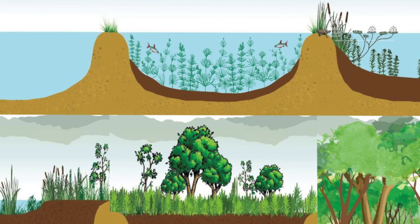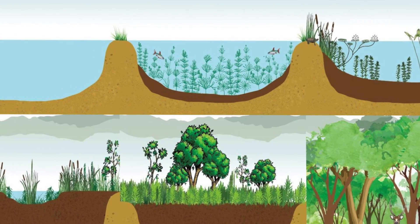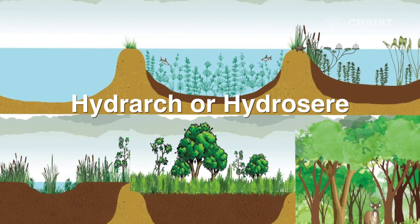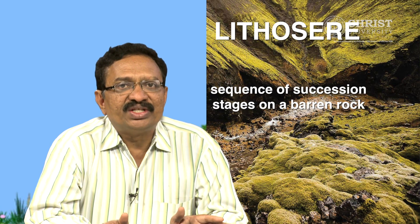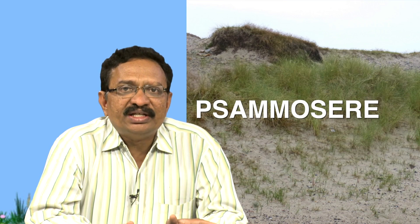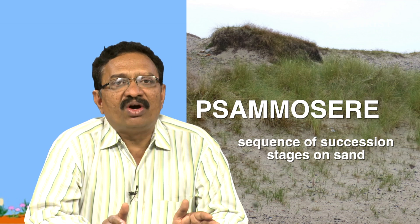Successions beginning on watery habitats such as ponds, lakes, marshes, etc. are called hydrosere. Successions beginning in dry habitats are termed xerosere. The xeroseres are of two types: lithosere, meaning the sequence of succession stages on a barren rock, and xerosere, meaning the sequence of succession stages on sand. The climax vegetation in any area is ultimately determined by its climate. The climax community throughout a climatic region is therefore the same, whether it begins as a xerosere or a hydrosere.